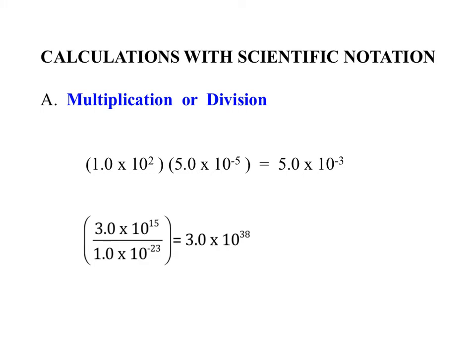For multiplication or division in scientific notation: multiply the numbers and add the exponents for multiplication. For example, 1.0 × 10² times 5.0 × 10⁻⁵ = 5.0 × 10⁻³. For division, divide the numbers and subtract the exponents: for example, dividing gives 3, and subtracting (15 − (−23)) = 38, giving a result of 3 × 10³⁸.